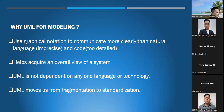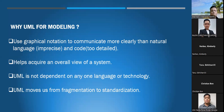Why UML for modeling? We use graphical notation to communicate more clearly when natural language is ambiguous and code is too detailed. For example, if you are trying to develop a database management system, you will use a model or diagram first before you try to code. It helps acquire an overall view of a system. UML is not dependent on any one language or technology, and moves us from fragmentation to standardization.